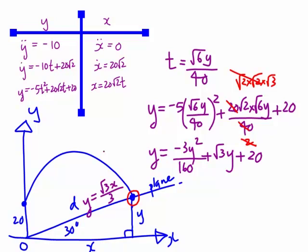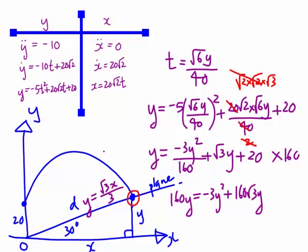Multiplying through by 160 to clear fractions gives 160y = −3y² + 160√3·y + 3200. Bringing everything to one side: 3y² + 160(1 − √3)y − 3200 = 0. This is now a quadratic in terms of y, and we need to solve it using the quadratic formula.